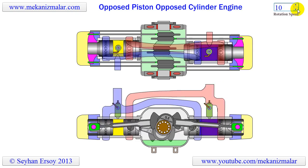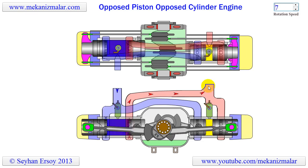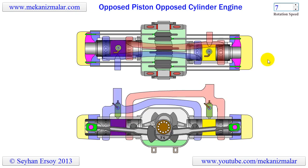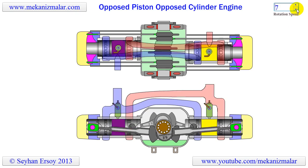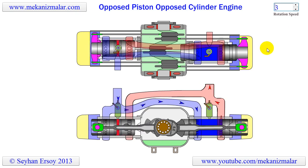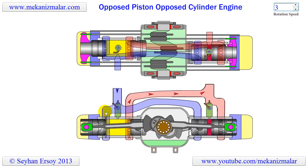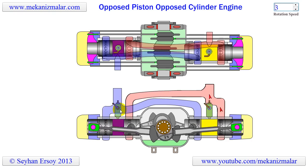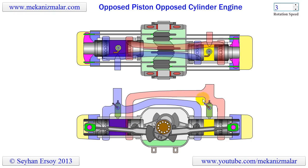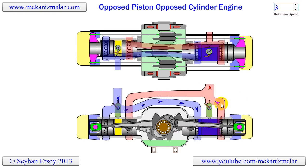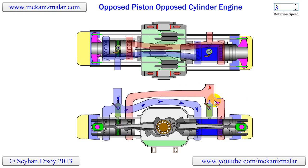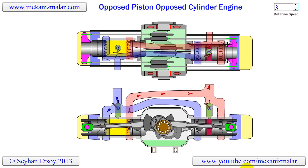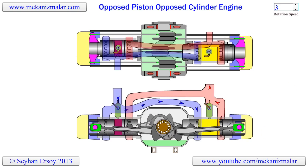The inlet and exhaust gas movements are emphasized by arrows. The blue arrows indicate turbocharged inlet air, while the red arrows indicate exhaust gases. We encourage you to subscribe to our channel and give a thumbs up to this video.